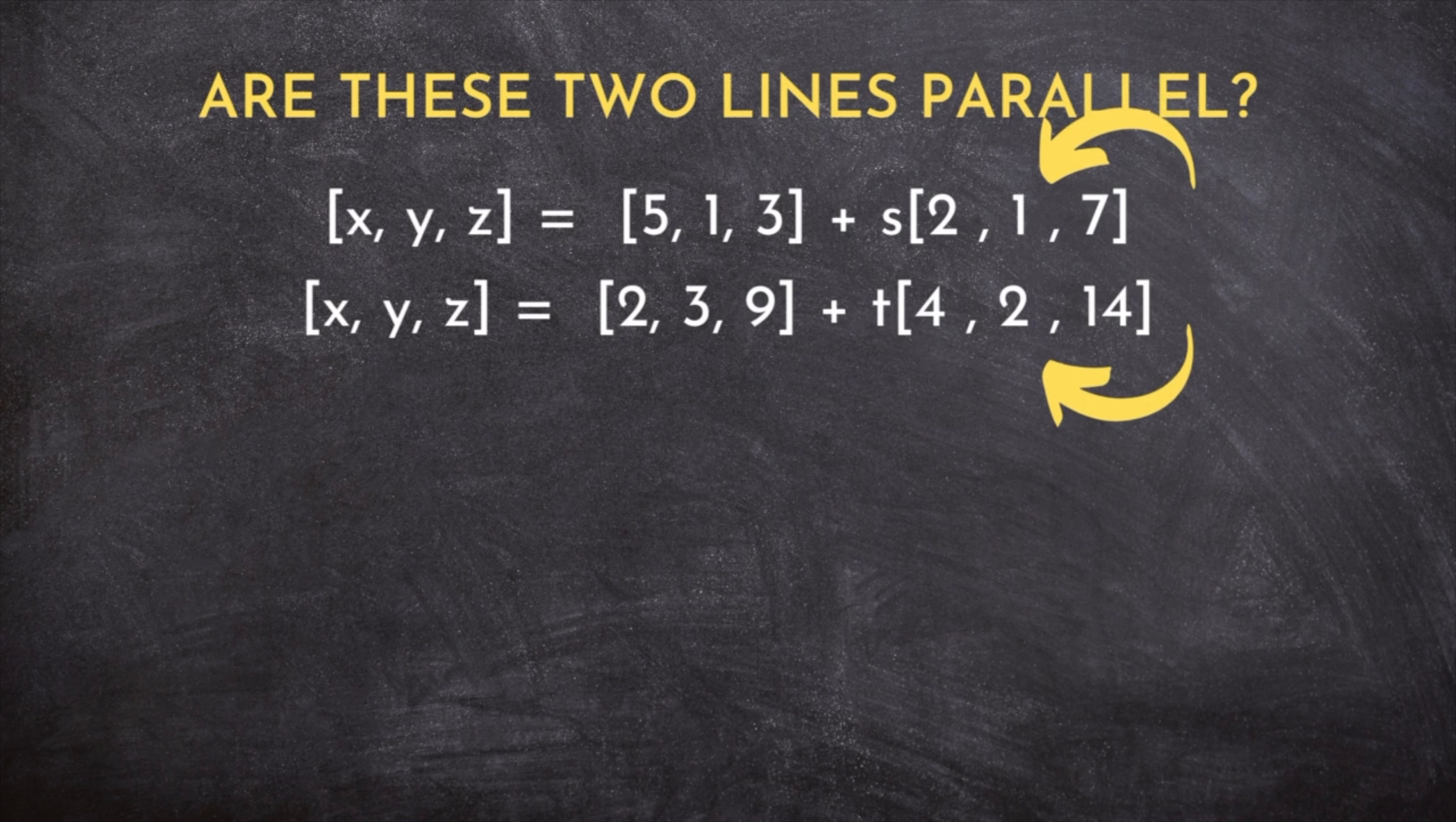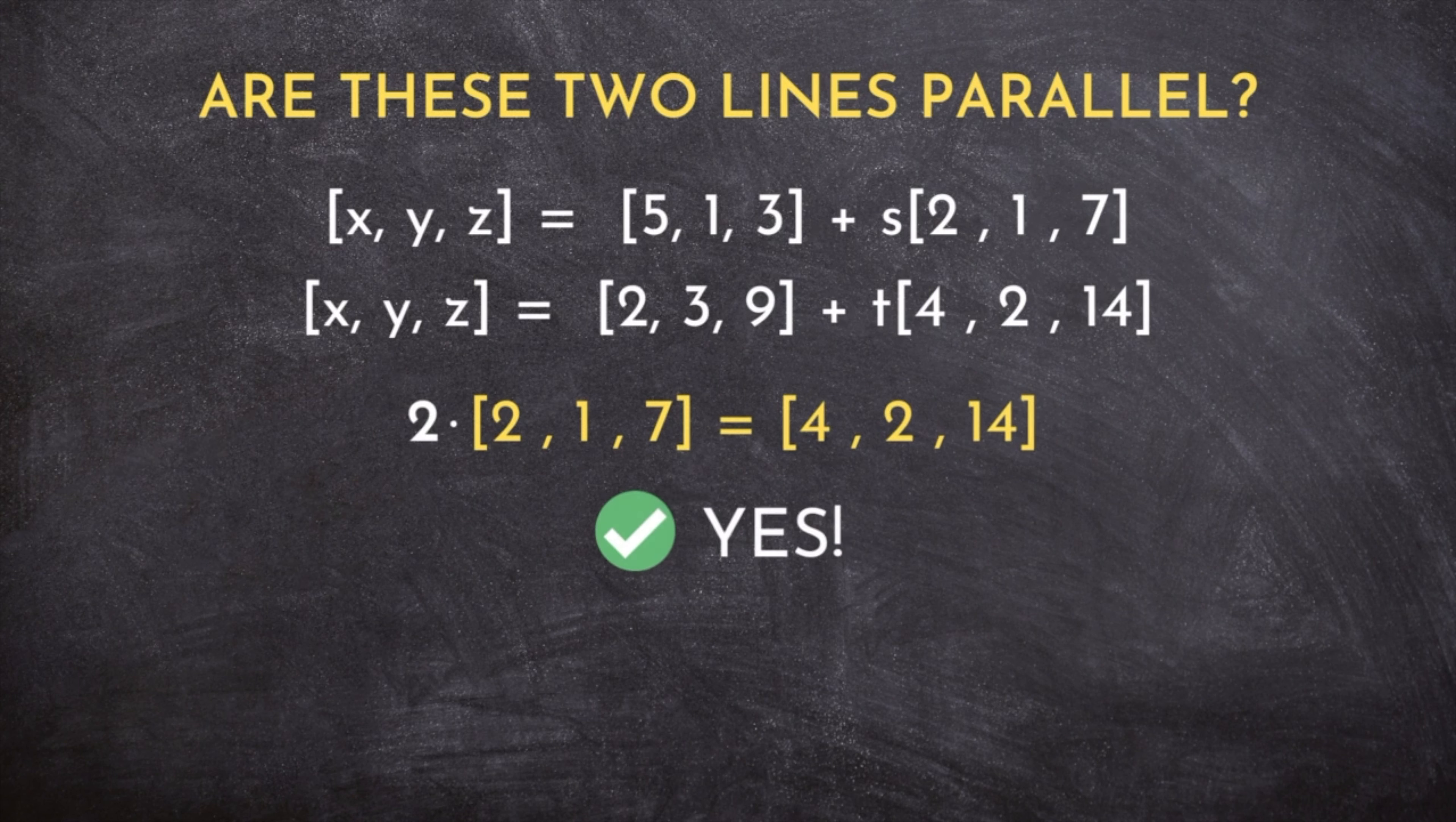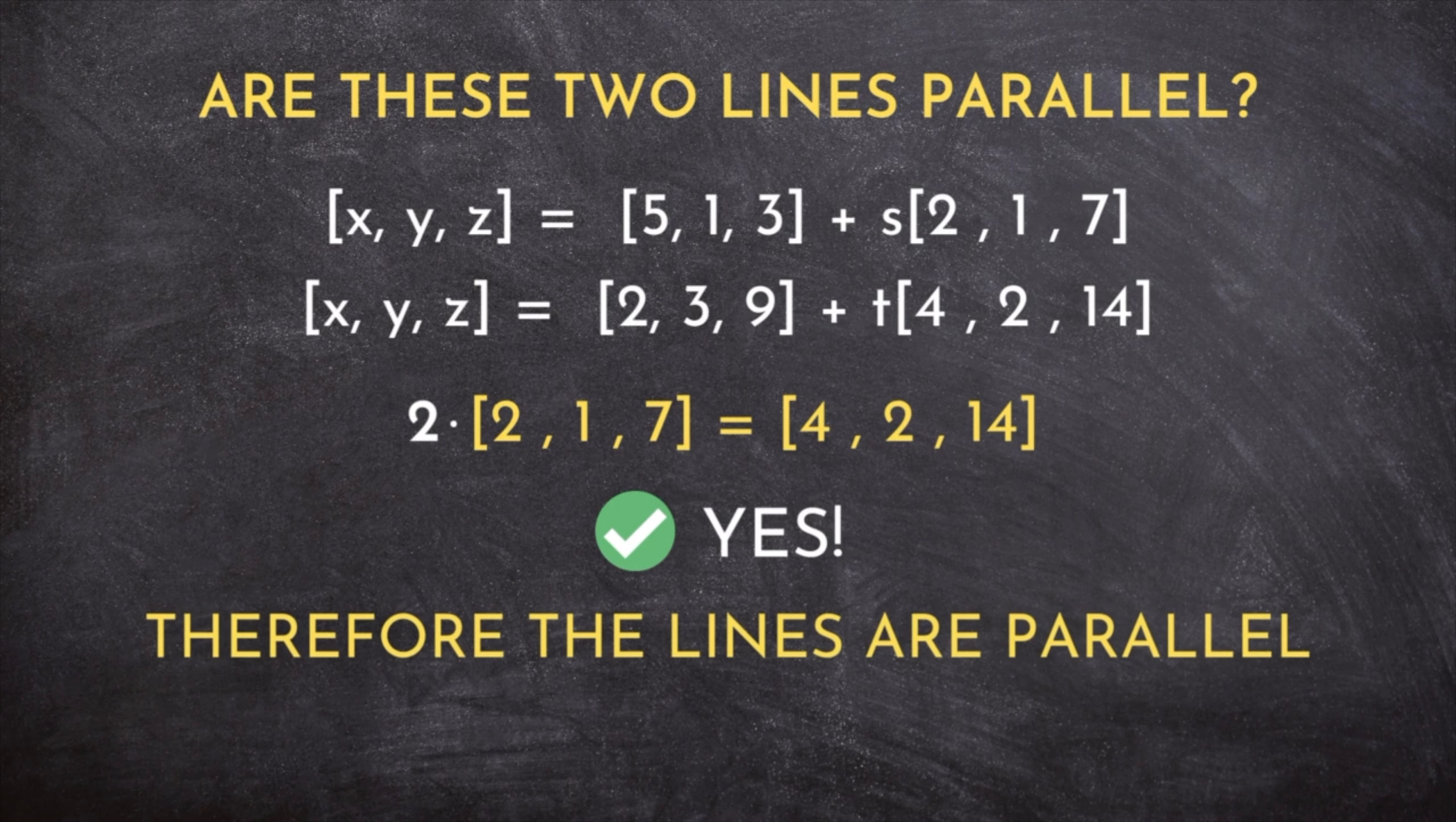And you can see that if you multiply the direction vector of the first line by two, you get the direction vector of the second line. So enough said, these two lines are parallel, right? Well, sort of.